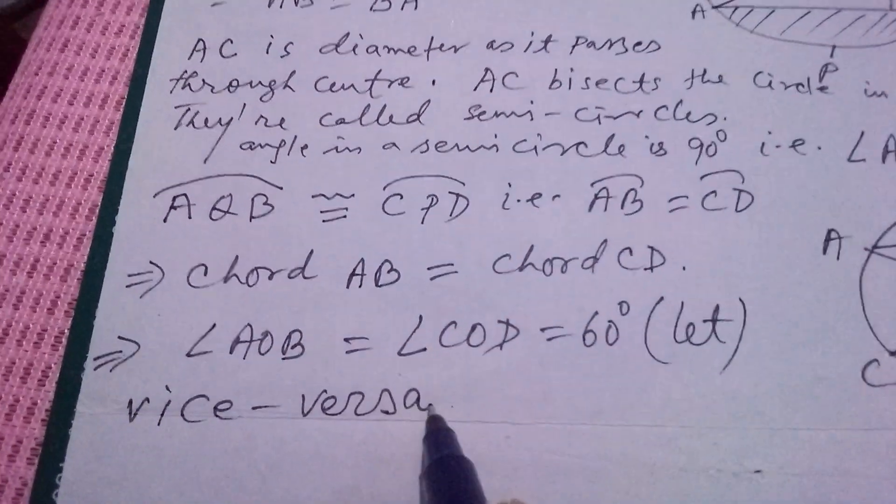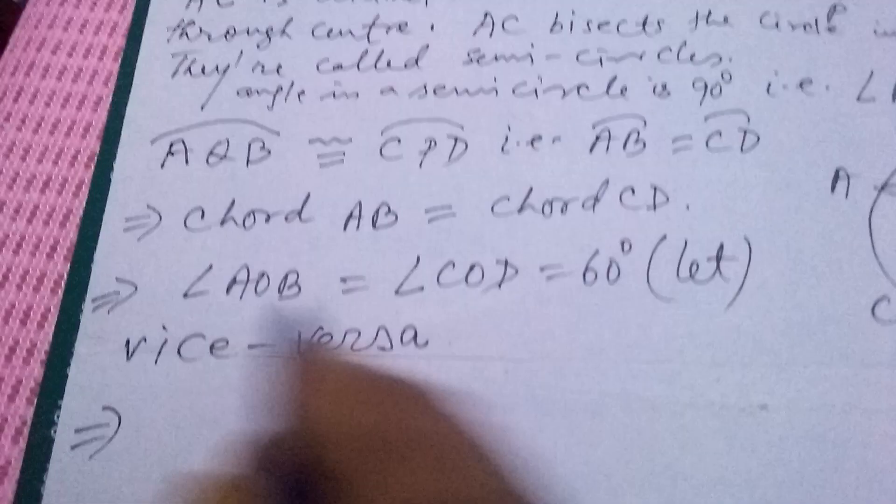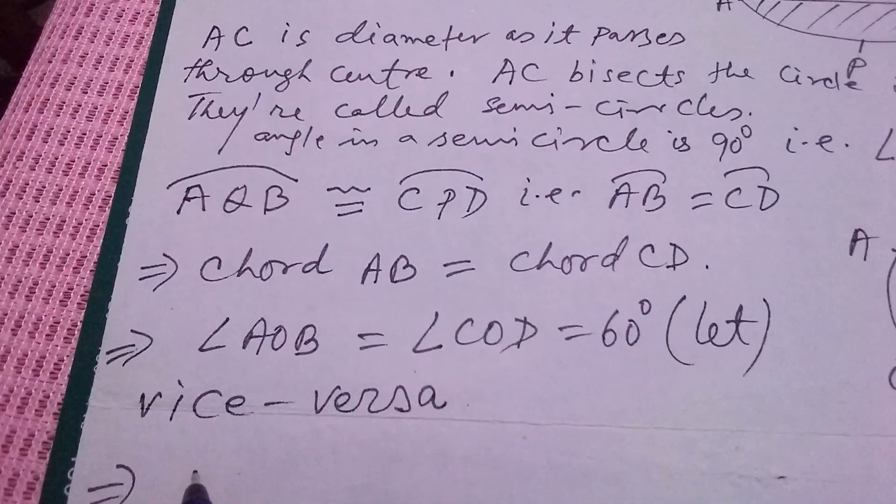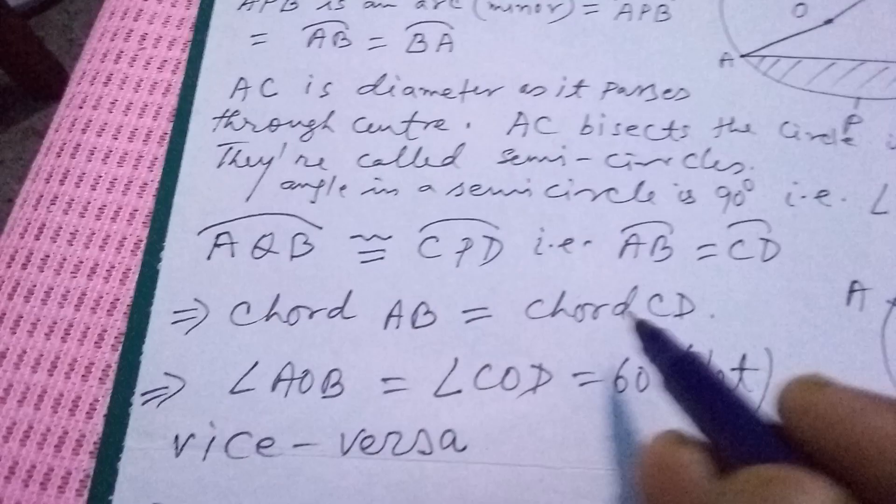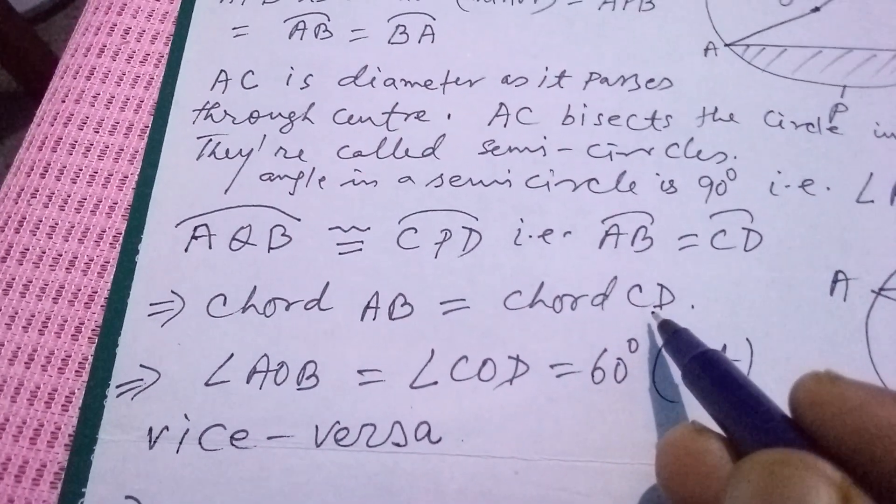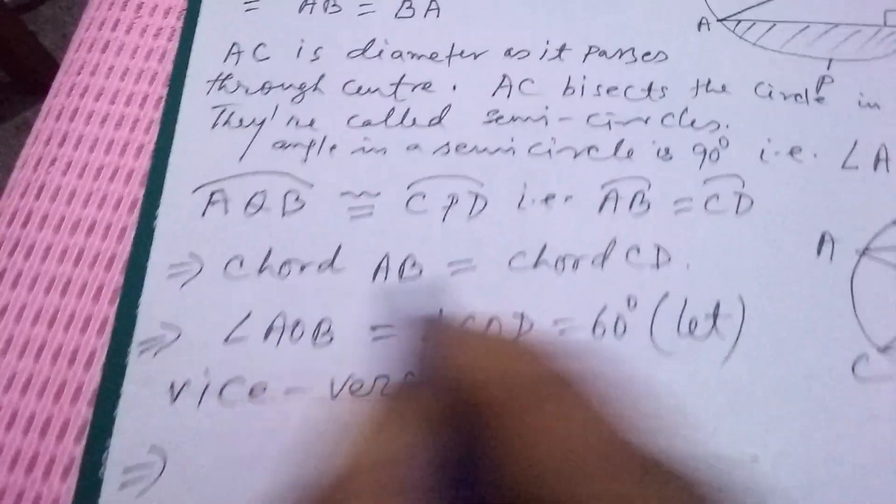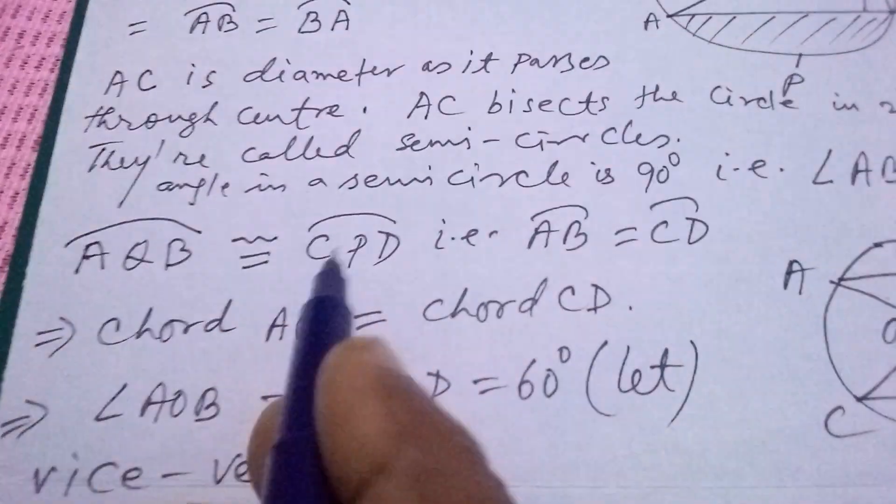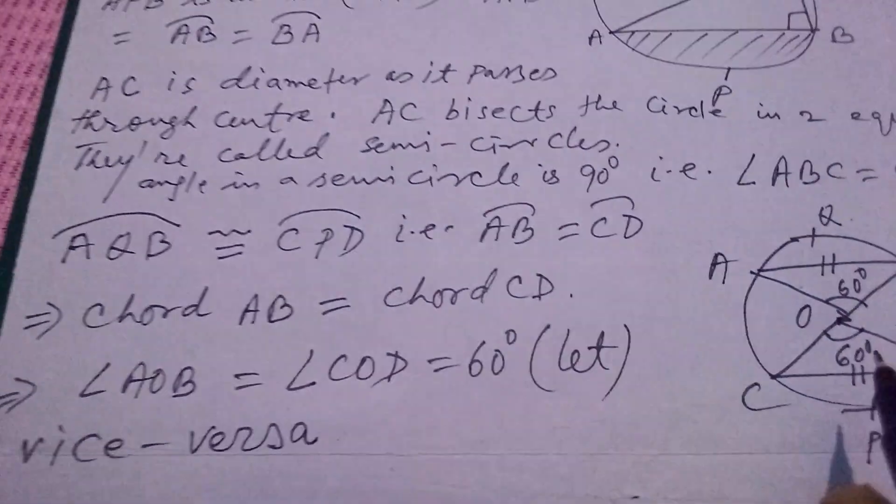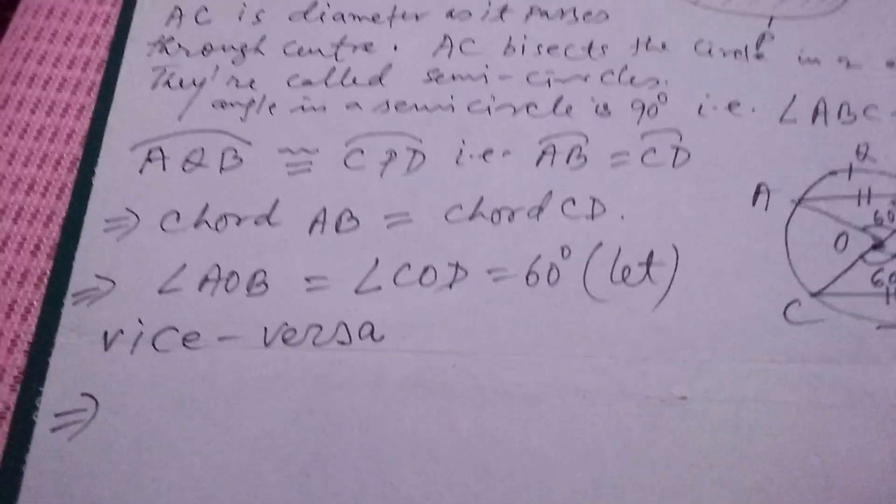Vice versa means, here if these two angles are equal, it implies chord AB equals to chord CD. And when these two chords are equal, their corresponding arcs are equal. So we have to keep in mind that they will be correspondingly equal.